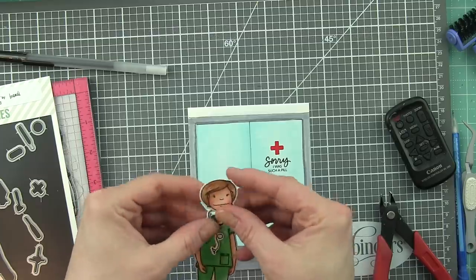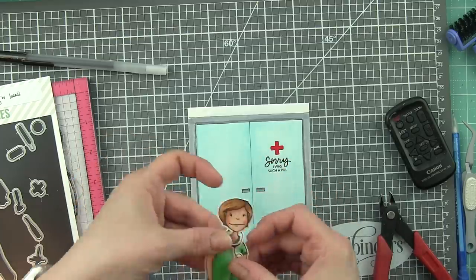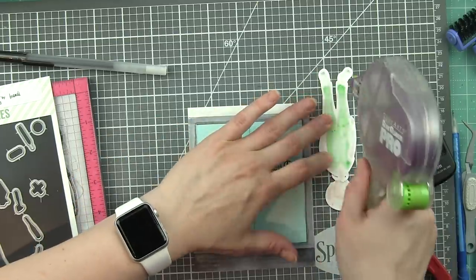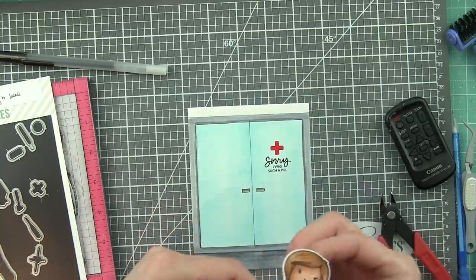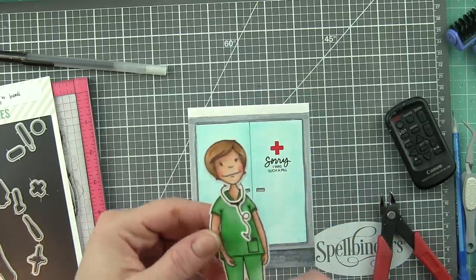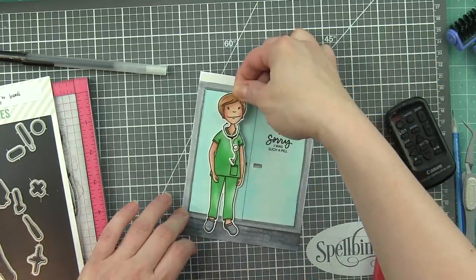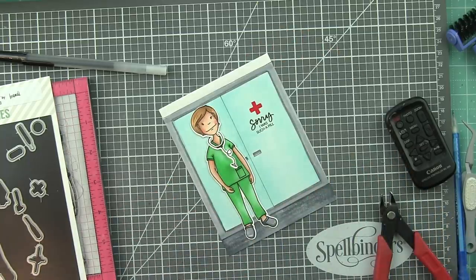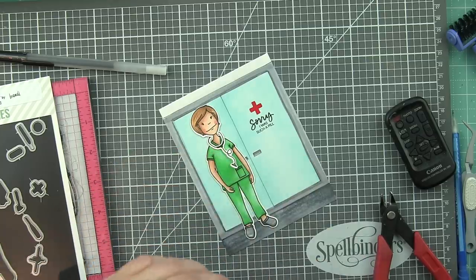I've die cut everything. I've put the stethoscope around her neck, which I think is super fun. I love that. And we're going to pop her in place on the card. Such a fun little easy backdrop for her. I love that.